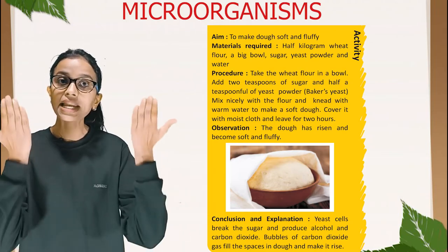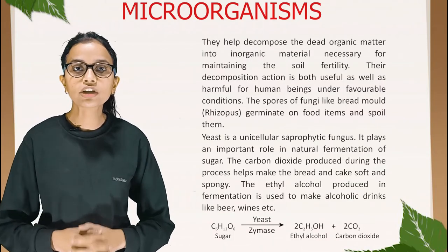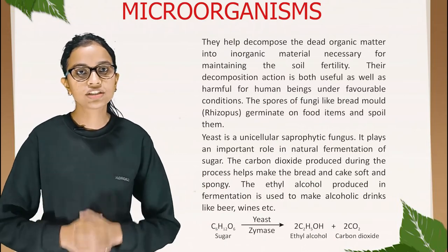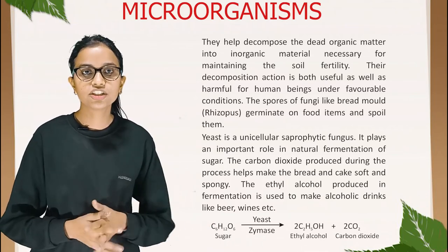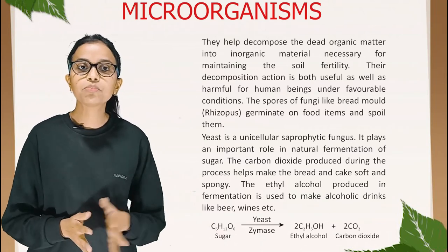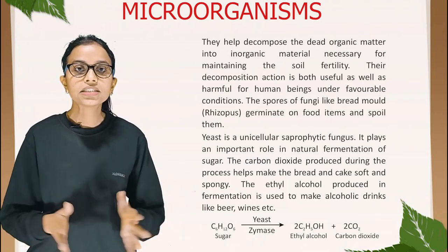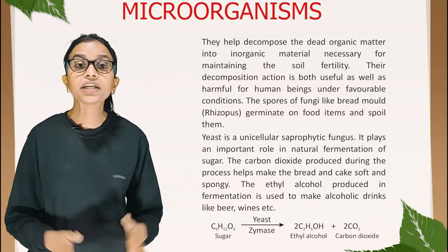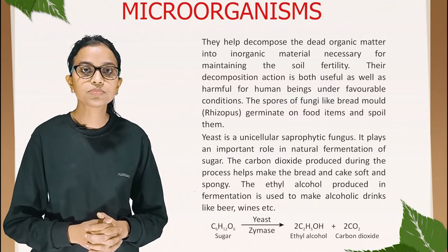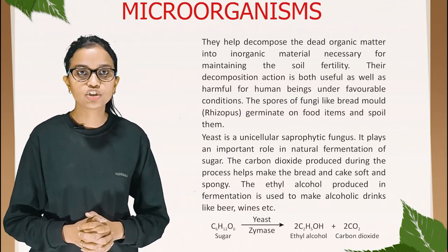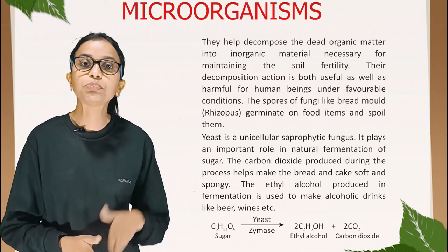Fungi help decompose dead organic matter into inorganic material, maintaining soil fertility. Under favourable conditions, the spores of fungi like bread mold (Rhizopus) germinate on food items and spoil them. Yeast is a unicellular saprophytic fungus that plays an important role in the natural fermentation of sugar. The carbon dioxide produced during the process makes bread and cake soft and spongy. The ethyl alcohol produced in fermentation is used to make alcoholic drinks like beer and wine.